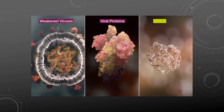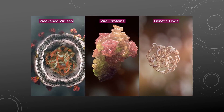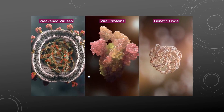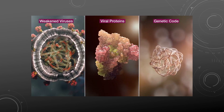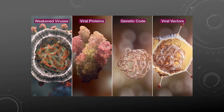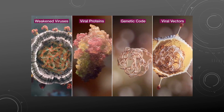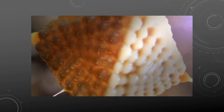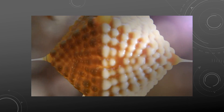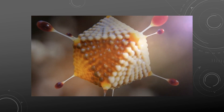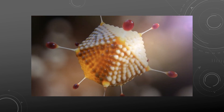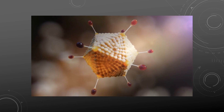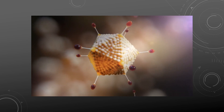A COVID-19 adenoviral vector vaccine is an adenovirus vector based on a common cold that has been modified and inserted with the genetic material for the SARS-CoV-2 spike protein. Production starts with assembly of its genetic code.